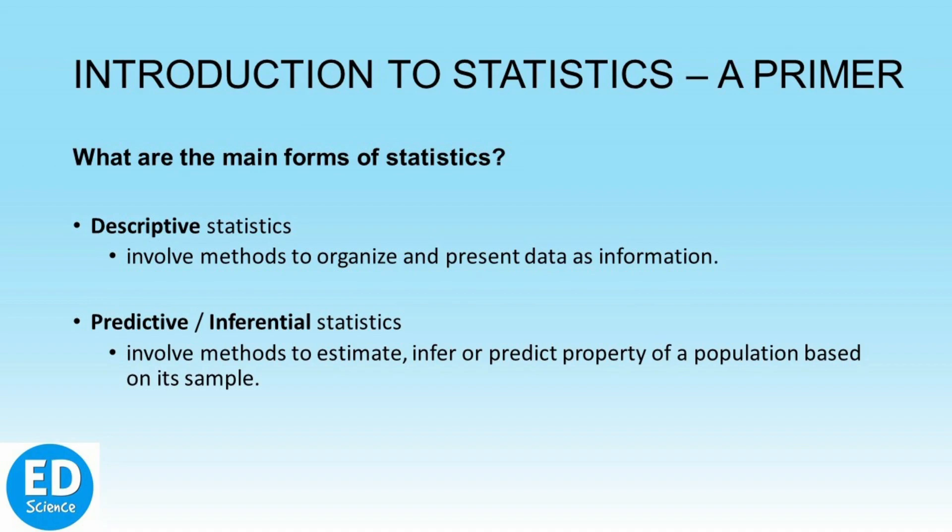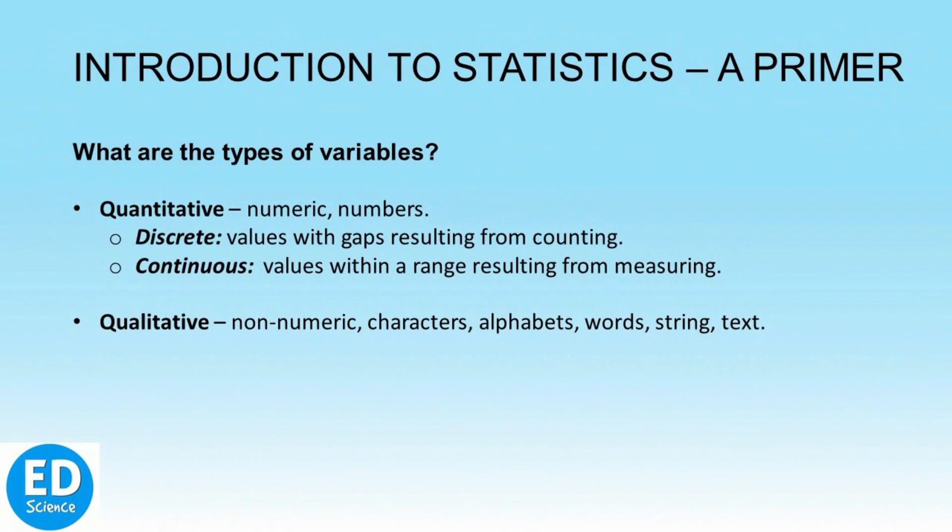To describe or predict something, we need variables. Variables can be either numbers or characters. When we think of numbers, we think of quantity, so numbers are quantitative variables. They are numeric data like the number of bank accounts we have or the number of students in a class. Numeric data can be discrete, meaning values with gaps, or continuous, meaning values within a range.